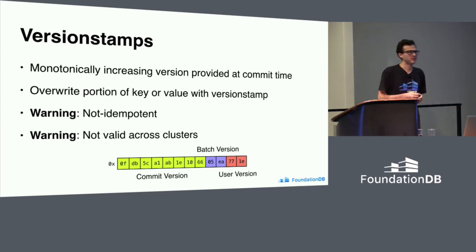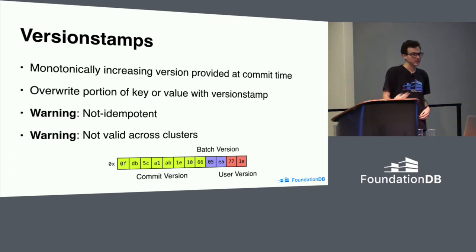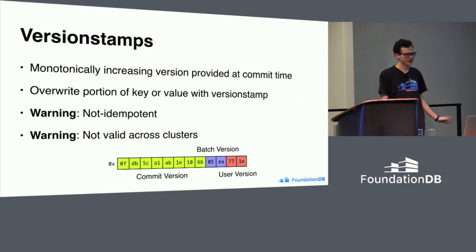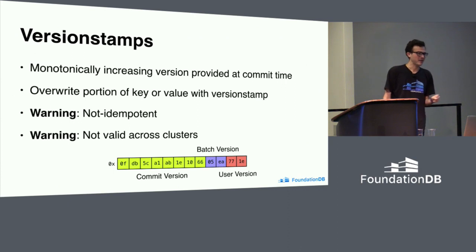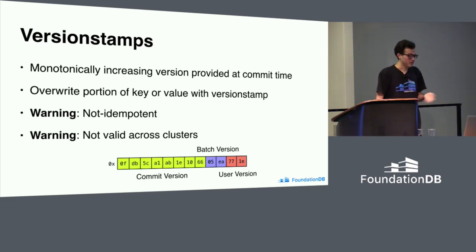The final technique is version stamps. Version stamps let you get a 10-byte monotonically increasing value from the database at commit time and overwrite parts of your key or value with that value. FoundationDB guarantees that within a cluster, that value is unique and always goes up in time. This allows you to handle queues in a very high-contention way because there are no read conflicts at all — everything is handled by the cluster putting things in commit order. A couple of warnings: version stamps are inherently non-idempotent — if you retry a transaction, you will get a different key guaranteed. Also, the values aren't valid across clusters; you can't correlate versions from one cluster with another, including after restoring into a new cluster.